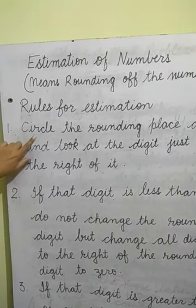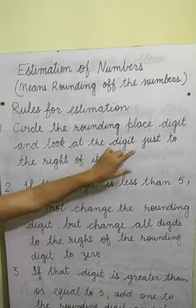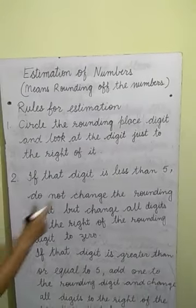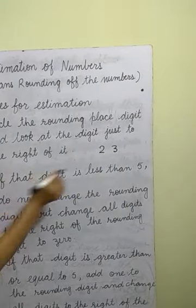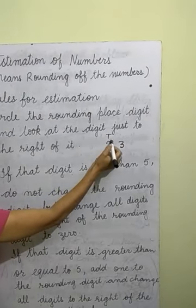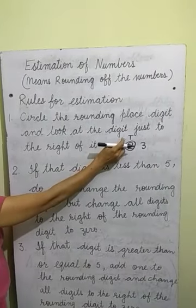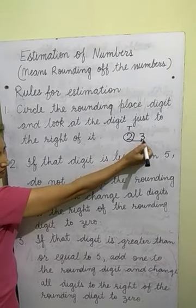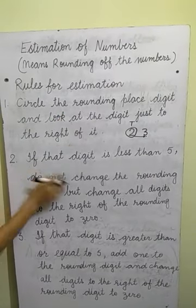The first rule: circle the rounding place digit and look at the digit just to the right. For example, if we want to round 23 to the nearest 10, then the rounding digit is 2. So circle the rounding digit and put an arrow to the right digit, which is 3.